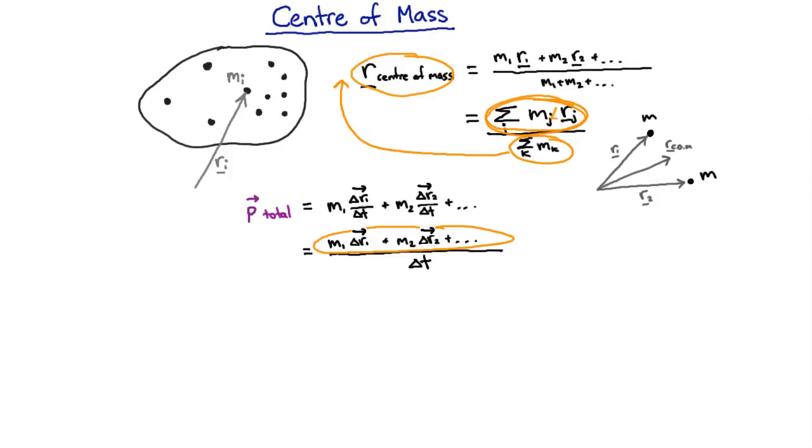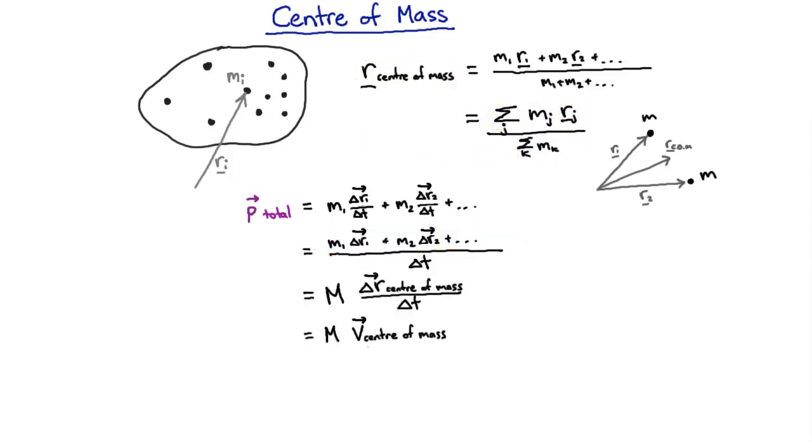And that means that we can rewrite this equation here. The total momentum is just the total mass times the velocity of the center of mass.